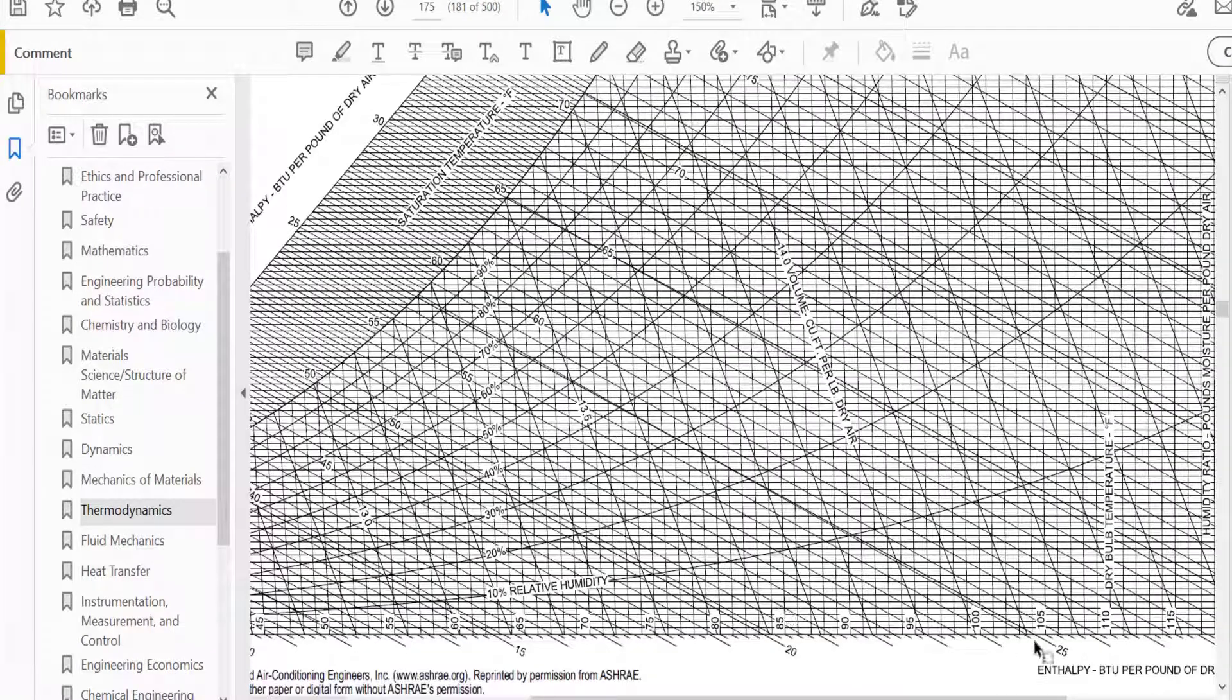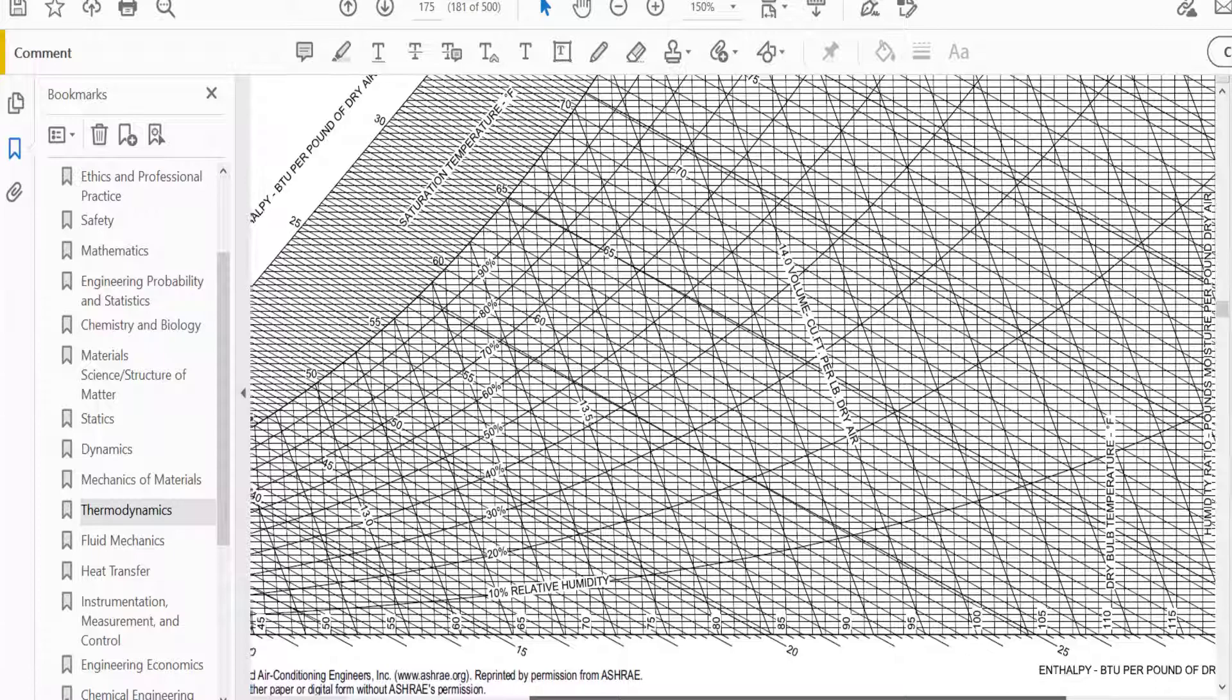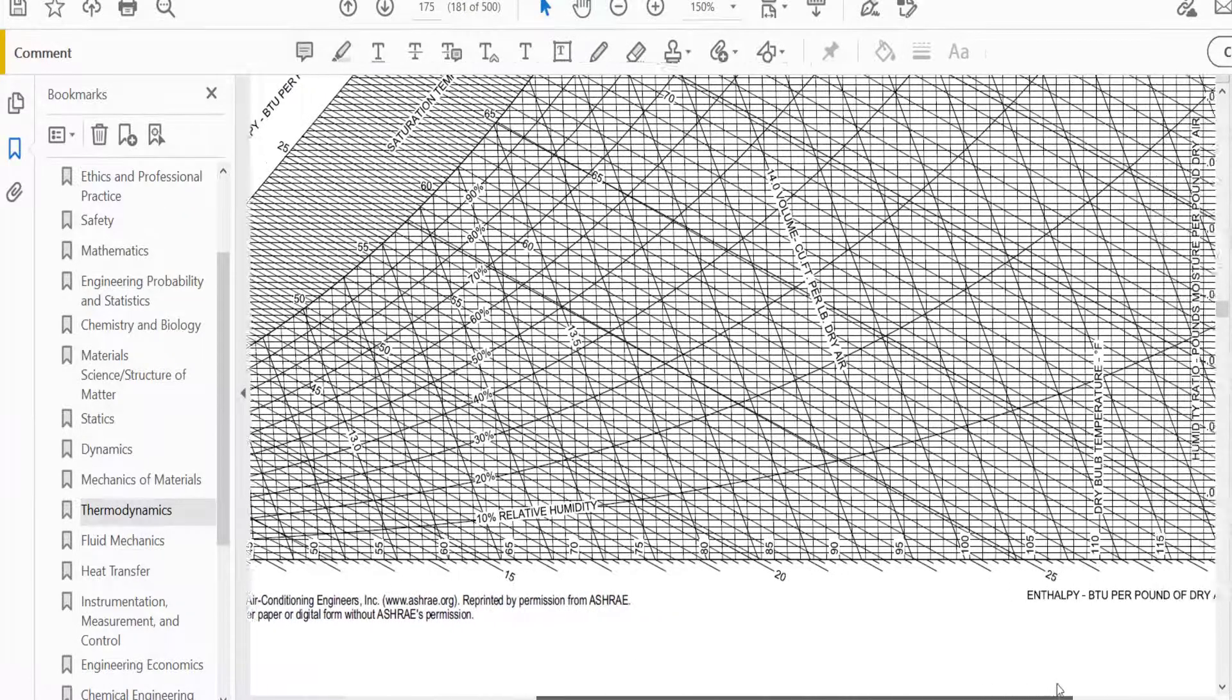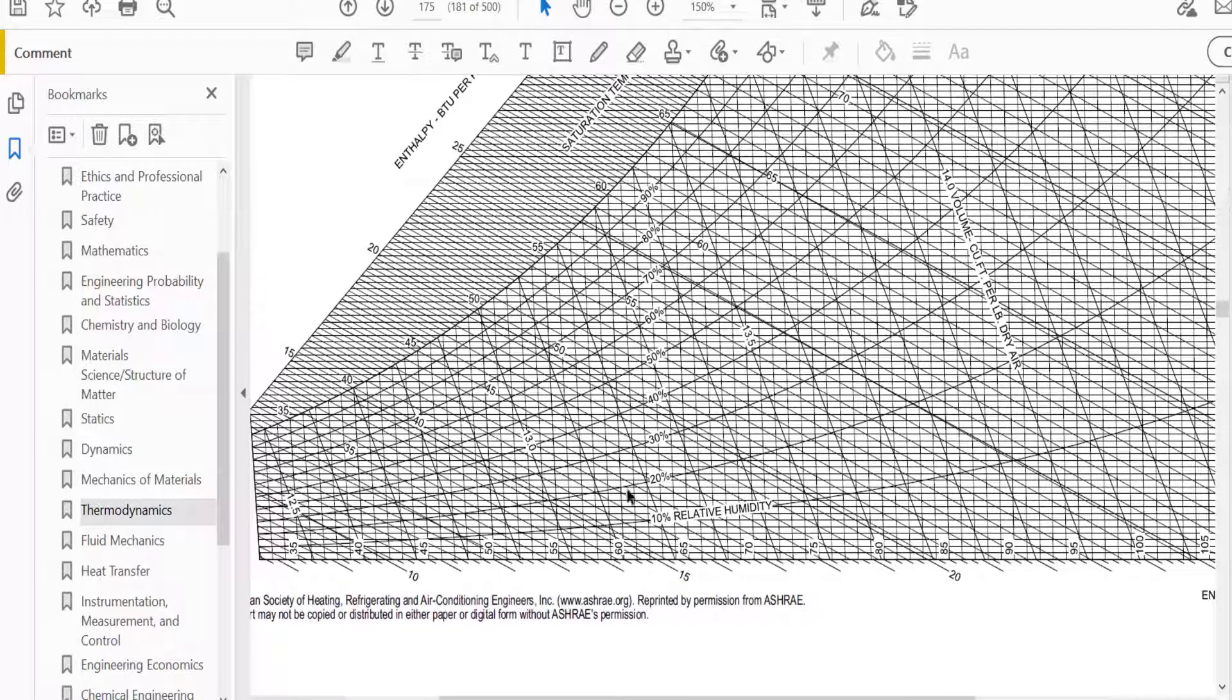So at the bottom, we know it's going to be the dry bulb temperature, right? This is 35, 40, 45, 50, 55 degrees Fahrenheit and so on, it increases. Then we know our relative humidity is going to be these lines. So this is 10, this is 20, 30, 40, 50, 60, 70.